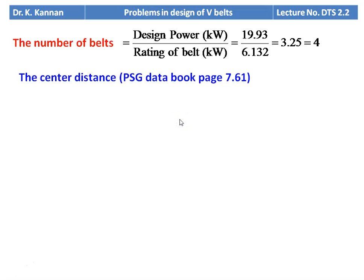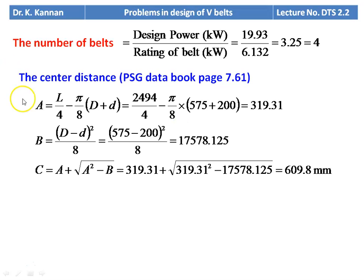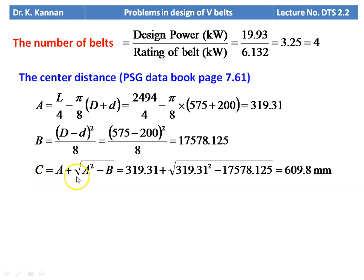We calculate the actual center distance using the equation from page 7.61. A = L/4 − (π/8)(D + d) = 319.31; B = (D − d)²/8 = 17578.125; C = A + √(A² − B) = 609.8 mm. All these equations are available on page 7.61.